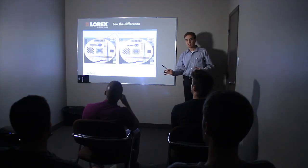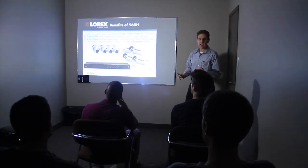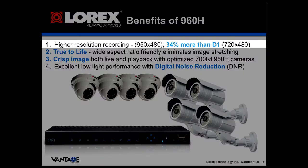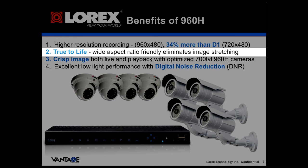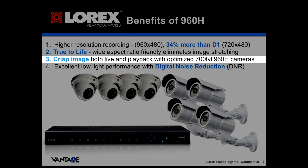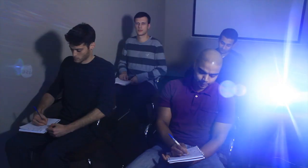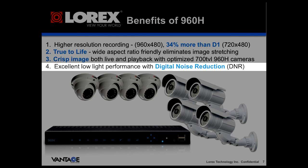So to conclude our lesson, there are four key advantages of 960H. First and foremost, higher resolution recording — 34% more than D1. Second, true to life aspect ratio so you don't have the stretching effect. Third, you have a crisp image both during daytime and nighttime with 960H optimized cameras. And finally, utilizing digital noise reduction, you get better low light performance.